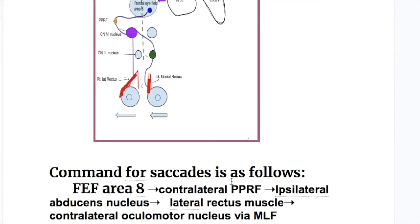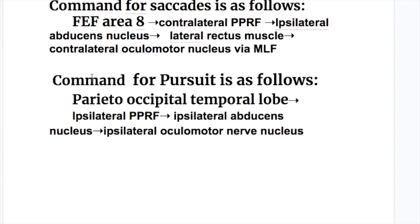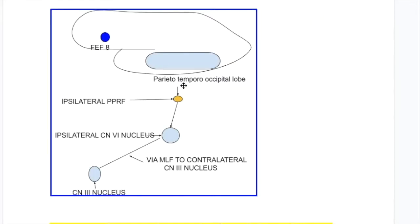The command for saccades is as follows: from frontal eye field area A to the contralateral parapontine reticular formation, to the ipsilateral abducens nerve nucleus, then to the lateral rectus muscle, and to the contralateral oculomotor nucleus via the medial longitudinal fasciculus.